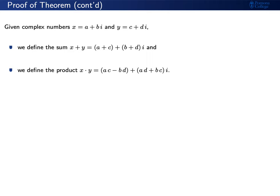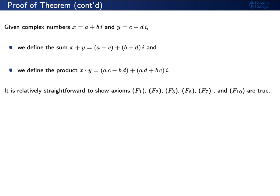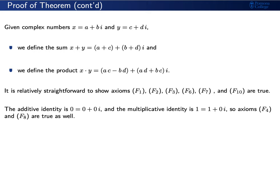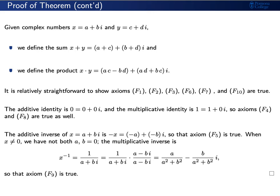We define the additive identity 0 as 0 plus 0i, identified as the origin in the plane. The multiplicative identity 1 is identified as 1 plus 0i, giving us two more axioms. The additive inverse of a plus bi is defined as negative a plus negative b times i. The multiplicative inverse is trickier: we need to show that 1 over a plus bi can be written in the form c plus di for some real numbers c and d.